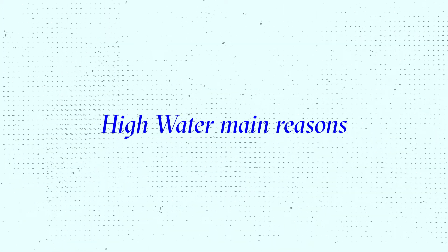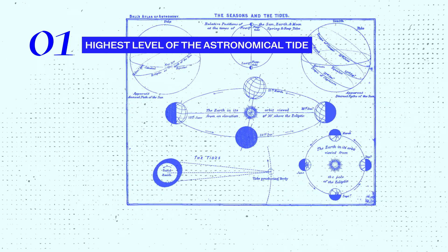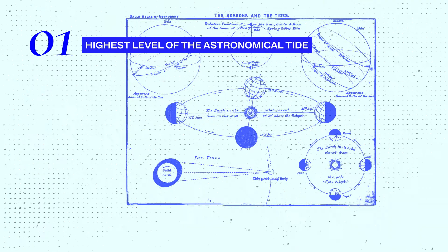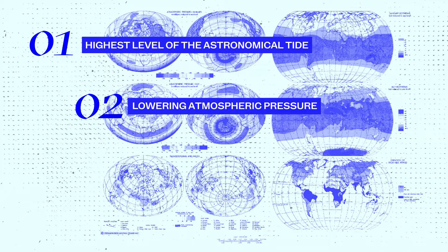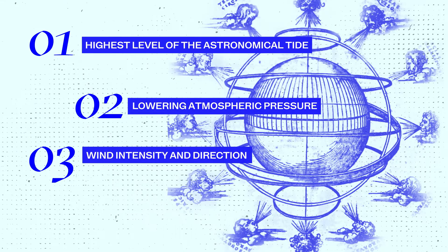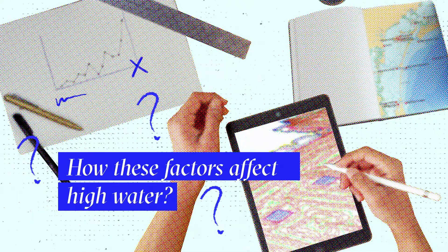The main reasons for high water are the highest level of the astronomical tide, lowering atmospheric pressure, wind intensity and direction. Let's see how these three factors affect high water.